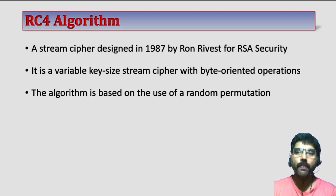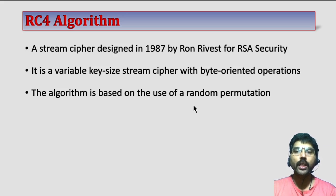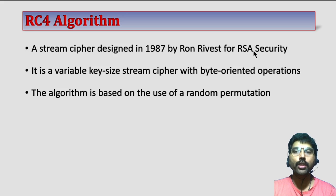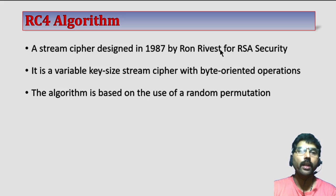RC4 algorithm is a stream cipher algorithm designed in 1987 by Ron Rivest for RSA Security. Initially it was a proprietary algorithm used by RSA Security. The RC name comes from Rivest Cipher — RC4 means Rivest Cipher version 4.